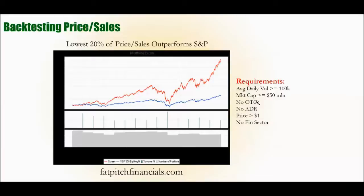From those 3,300 stocks, they took the lowest 20% by price-to-sales ratio and saw significant outperformance versus the S&P 500. They recalculated this at the start of each year, and you can see the lowest 20% really outperforms. Another interesting strategy: if you go long the lowest 20% and short the highest 20% of price-to-sales — where you're paying the most for $1 of sales, stocks that are overvalued by that metric — those stocks actually underperformed the S&P 500 and were negative. So buying the lowest 20% and selling the highest 20% can generate even better returns.